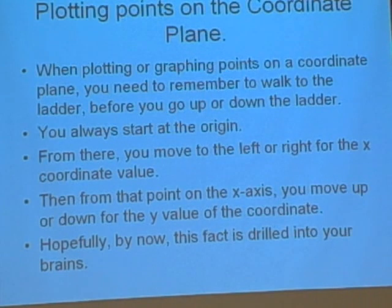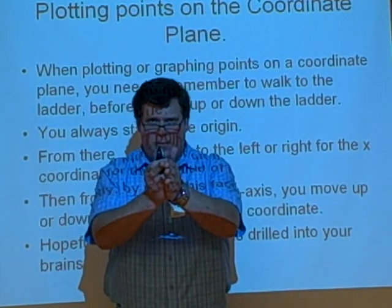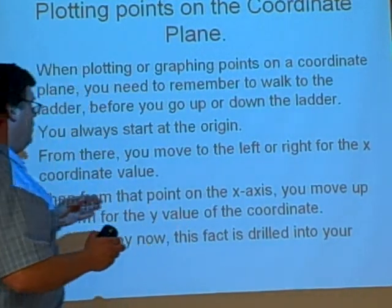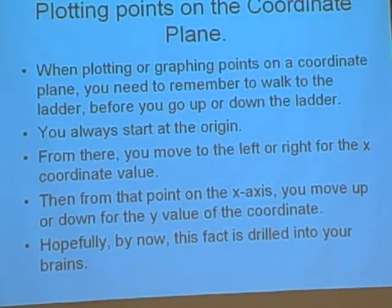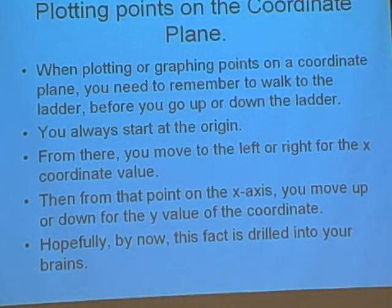Plotting points on the coordinate plane. When plotting or graphing points on a coordinate plane, you need to remember to walk to the ladder before you can go up or down the ladder. You always start at the origin, that (0,0) point. From there, you're going to move left or right depending on that first number. If the number is positive, you're going to move to the right. If the number is negative, you're going to move to the left. Then from that point on the x-axis, you're going to move up or down the y-value for the coordinate. Hopefully, by now, this fact is drilled into your brains.